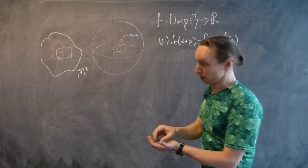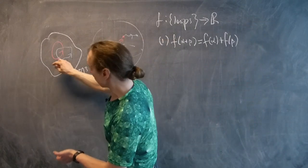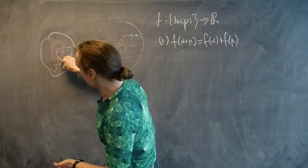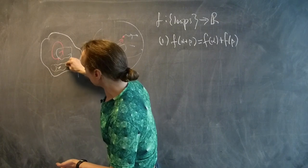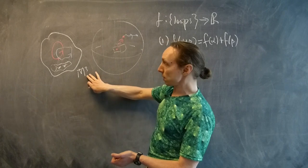The second property is harder to describe. Suppose that we have inside of our 3-manifold a loop that bounds a surface.